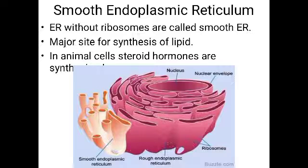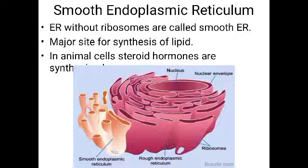The function of the smooth endoplasmic reticulum is the synthesis of lipids. So protein is synthesized by rough endoplasmic reticulum, and lipids are synthesized by smooth endoplasmic reticulum. In animal cells, lipid-like steroidal hormones are also synthesized in the smooth endoplasmic reticulum, as steroids are a type of lipid.